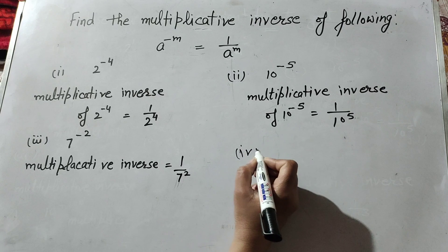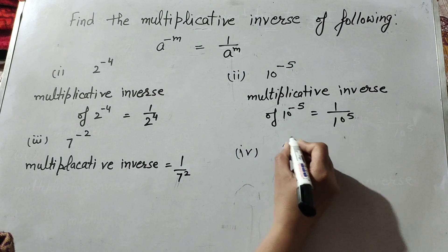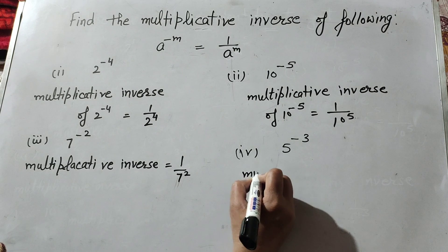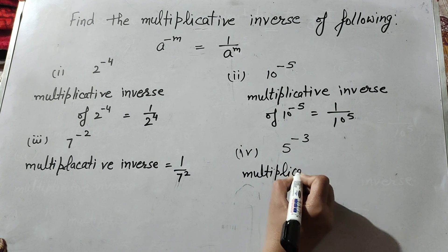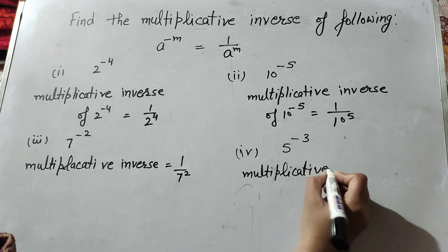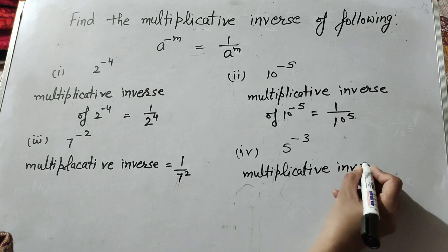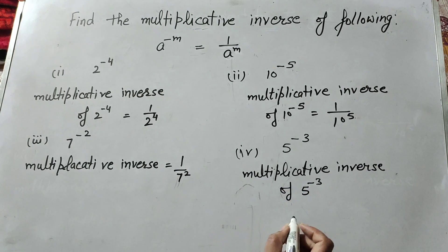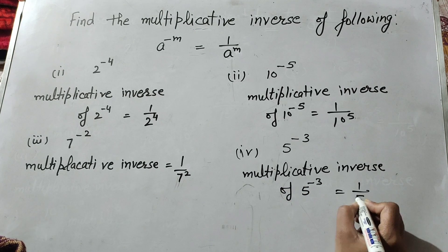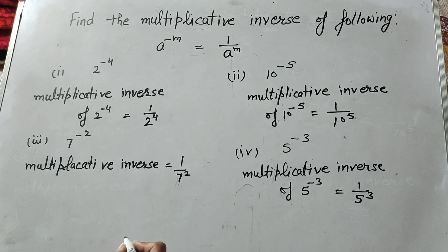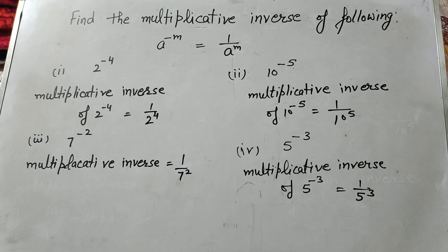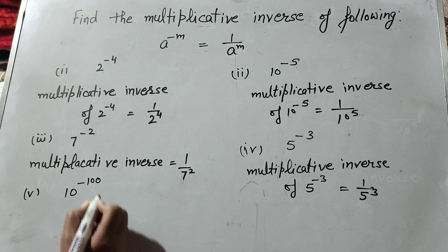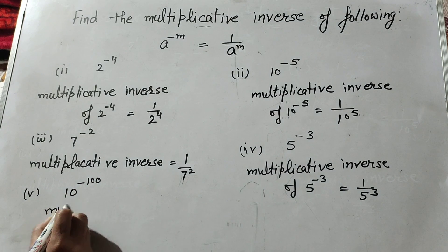In the fourth part it is 5 raised to power minus 3. The multiplicative inverse of 5 raised to power minus 3 is 1 over 5 raised to power 3. Now we move to the fifth part: 10 raised to power minus 100.